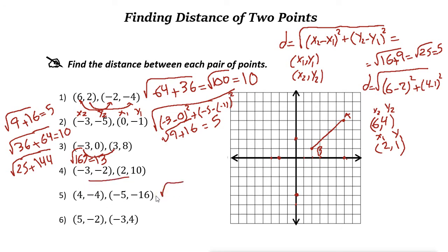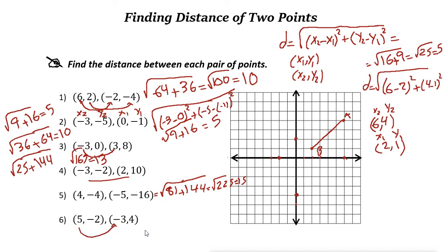Next example: 4 to negative 5 is 9, squared is 81. Plus negative 4 to negative 16, the distance is 12, squared is 144. 81 plus 144 is 225, and the square root of 225 is 15. So the answer is 15. Last one: 5 to negative 3 is 8, squared is 64. Negative 2 to 4 is 6, squared is 36. Square root of 100 is 10.